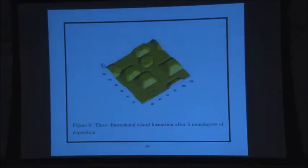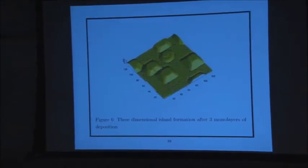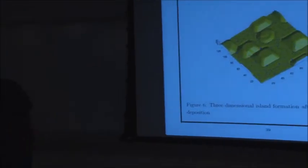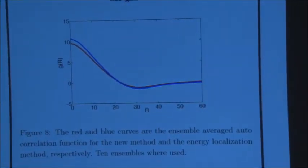Here's a simulation of a three-dimensional island forming after three monolayers of deposition — this is with the new method, and that's the old method. They're totally different, as you'd expect from a random process. But comparing the autocorrelation functions, they agree quite well.